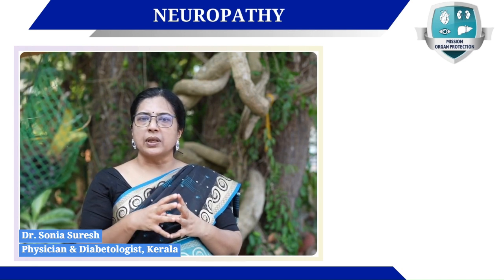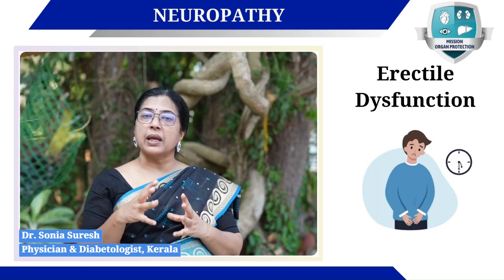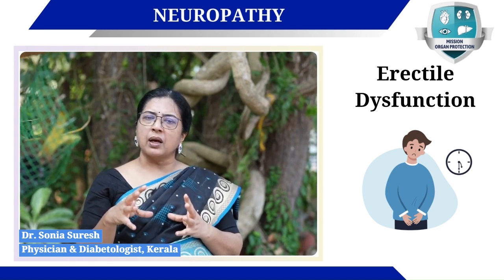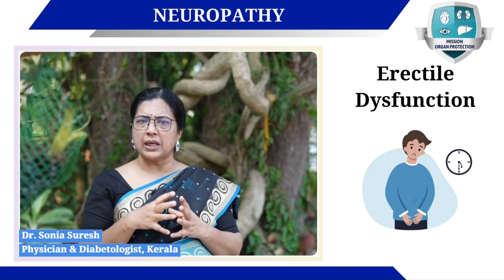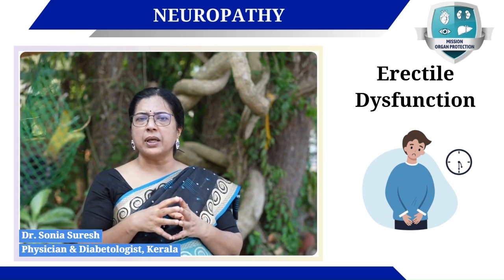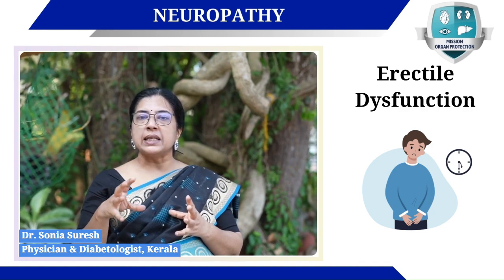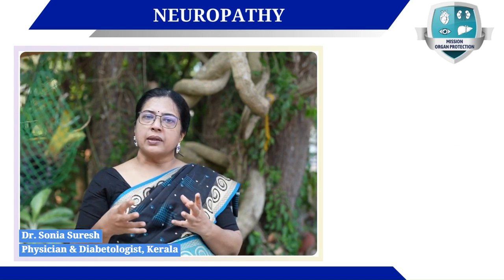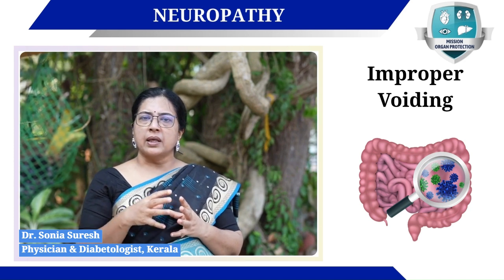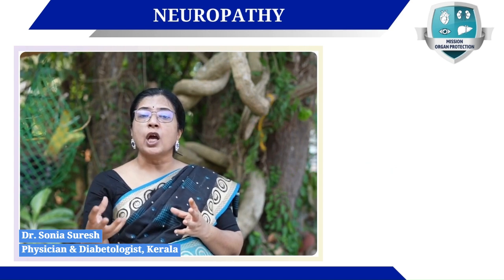Then we have genitourinary involvement, wherein first and foremost is erectile dysfunction. Erectile dysfunction and sexual abnormalities are very common in diabetic men. It can also be present in women — dryness and dyspareunia, or pain during intercourse. But erectile dysfunction is the commonest sexual abnormality seen in diabetic men. There are also urinary problems like improper voiding from the urinary bladder and frequent urinary tract infections, all resulting from autonomic involvement of the urinary system.